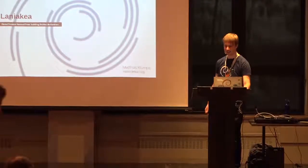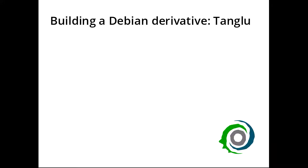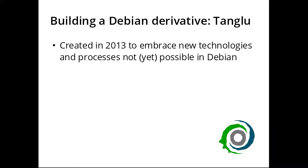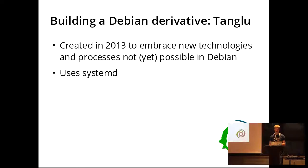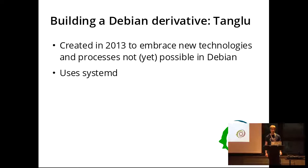Starting with what Debian derivative I'm actually building: the first actual derivative I made was Tanglu, which was created in 2013 to embrace technologies and processes that weren't possible in Debian at that time. It uses systemd — which is a really boring fact now, but back then in 2013 during the large systemd flame war, this was actually something remarkable. We thought we would just build a system based around systemd in order to show how it works and give Debian a data point on how it can work in a Debian-based system.